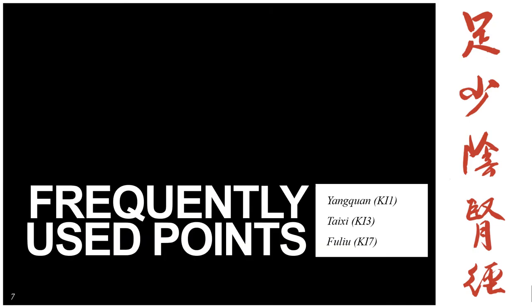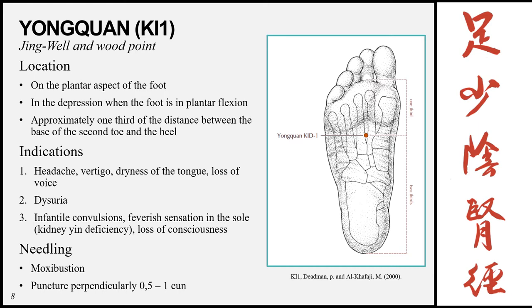The frequently used points on this meridian are Yongquan Kidney 1, Taixi Kidney 3, and Fuliu Kidney 7. Before discussing individual points, it's important to note that indications on the kidney meridian refer to disorders related to the kidney organ specifically. For example, vertigo listed here refers to vertigo caused by kidney qi deficiency or kidney yin deficiency, not vertigo caused by liver qi stagnation or liver fire.